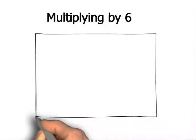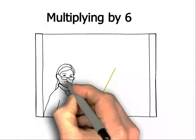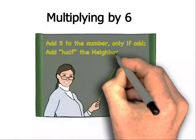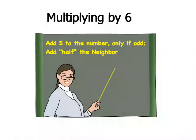Multiplying by 6. The rule for multiplying by 6 is add 5 to the number only if odd and add half the neighbour.